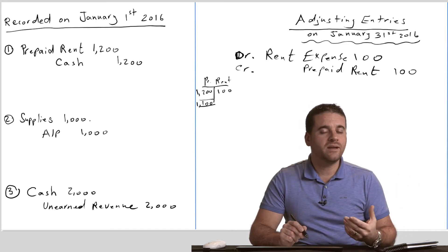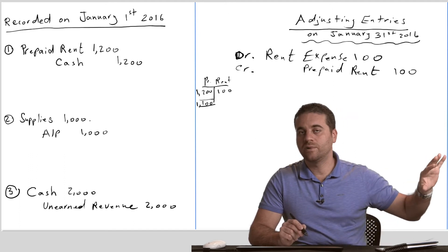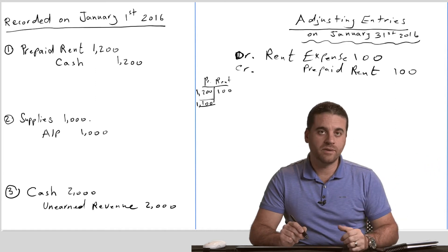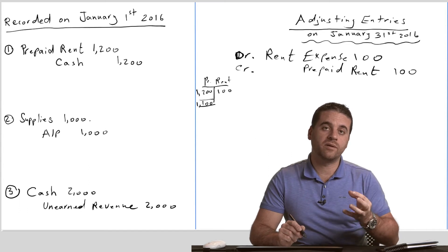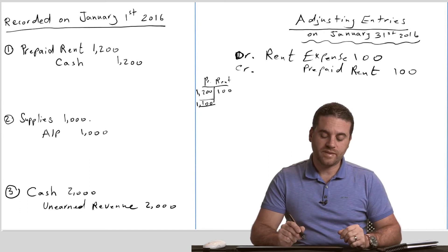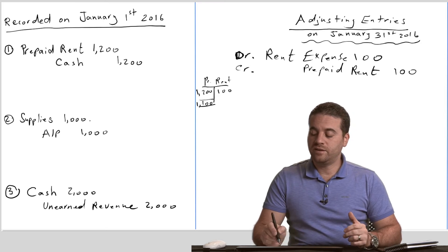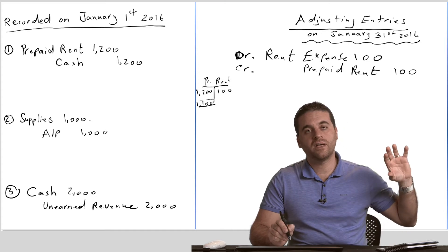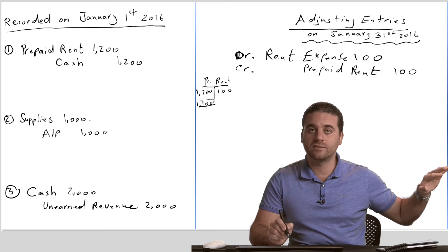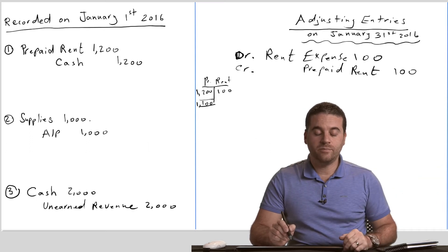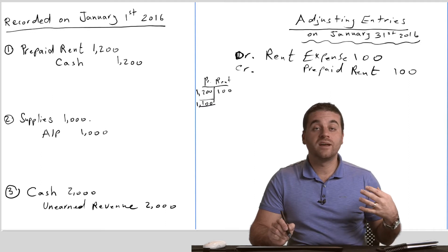If they are still sealed in the warehouse, then yes, they still have value. But once we start using them, we have to consume them — we have to record an adjusting entry for the amount of supplies consumed. At the end of January, we go back and find out how much leftover supplies we still have on the shelf or in the warehouse. In accounting, the leftover supplies are called supplies on hand.